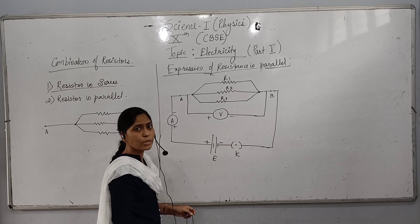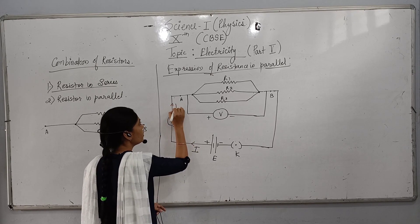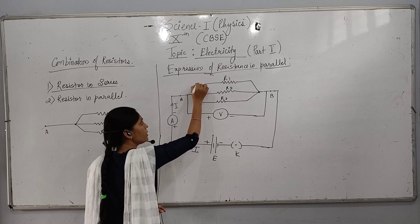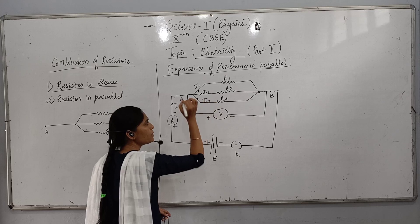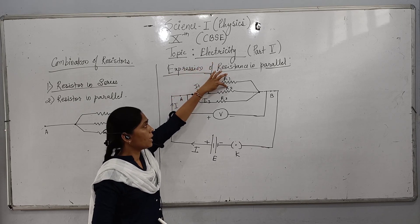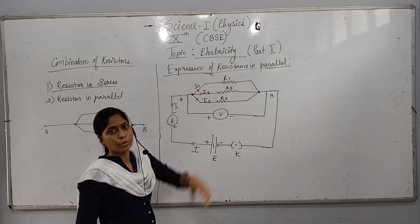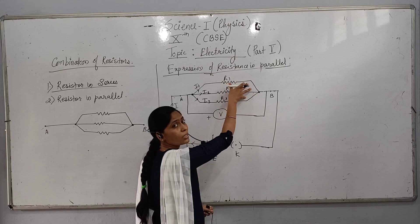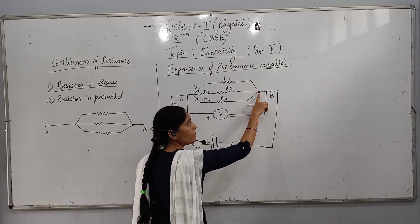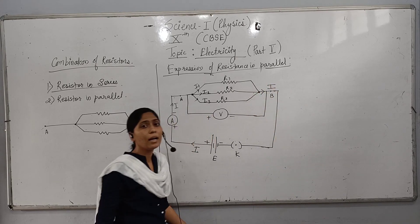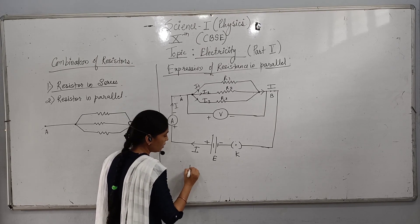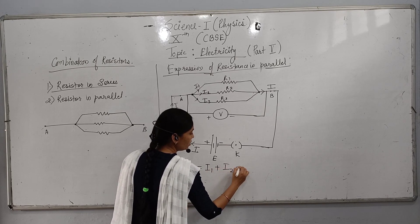Now when we switch on the key, current I starts to flow. But here we have a joint wire, and the joint wire causes the current to divide. So it will divide into R1, R2, and R3: I1 amount of current goes through R1, I2 through R2, and I3 through R3. So the total current I is equal to I1 plus I2 plus I3. This is equation number 1.